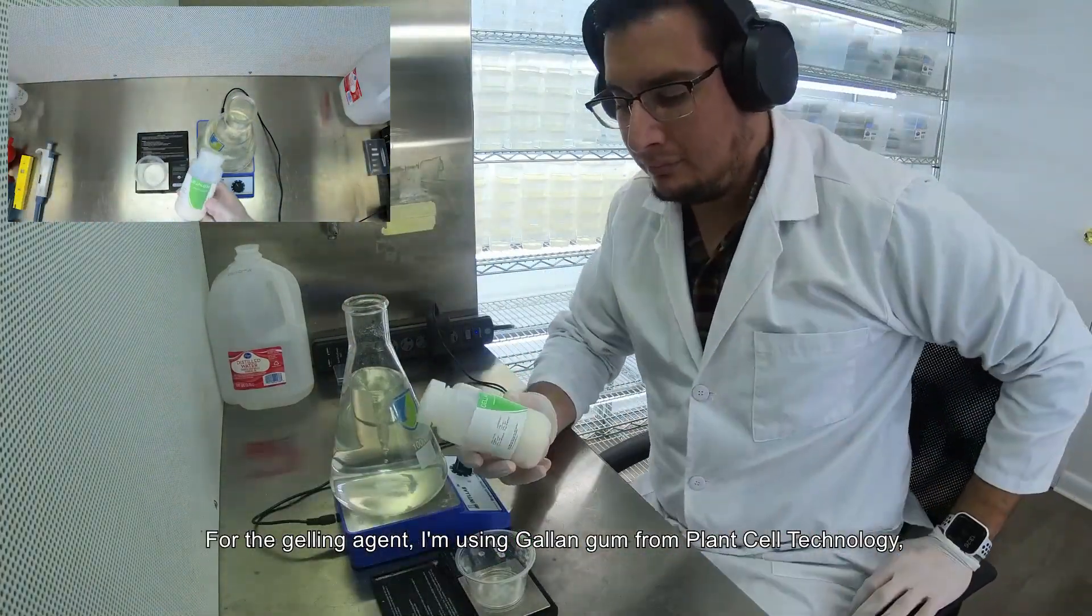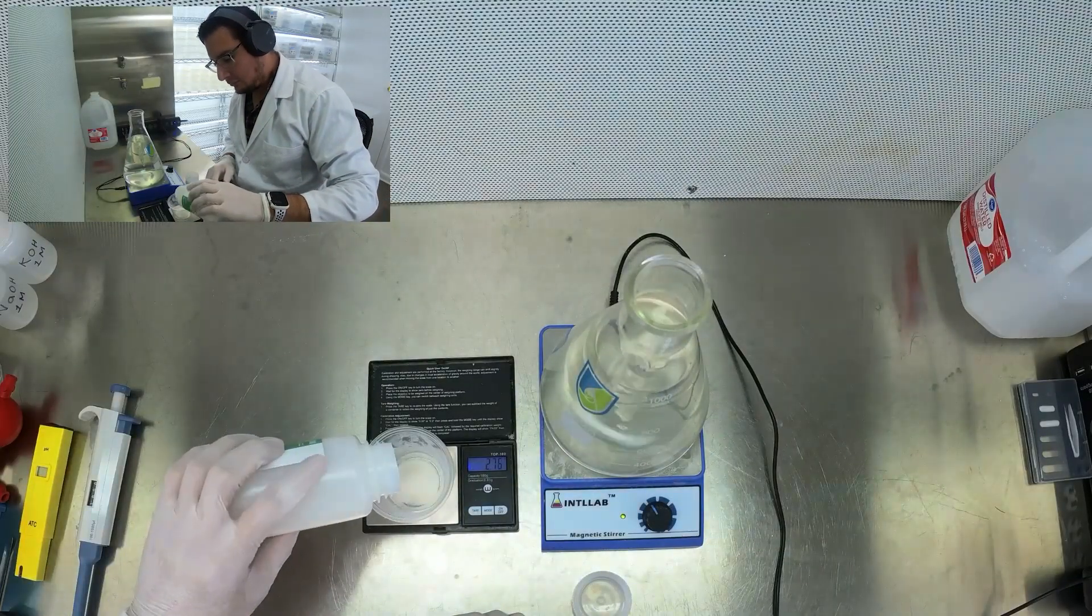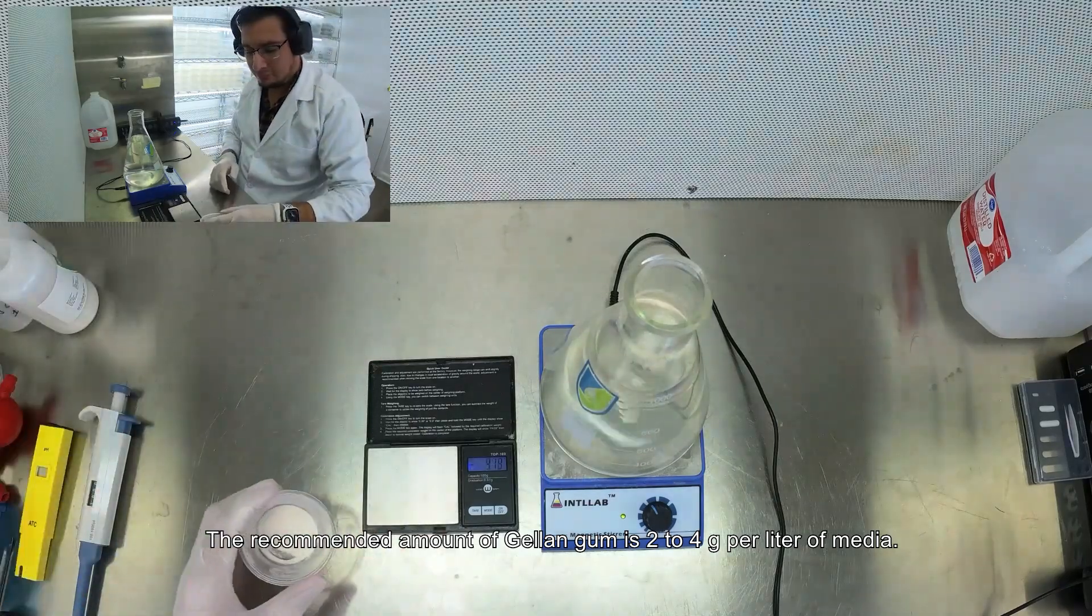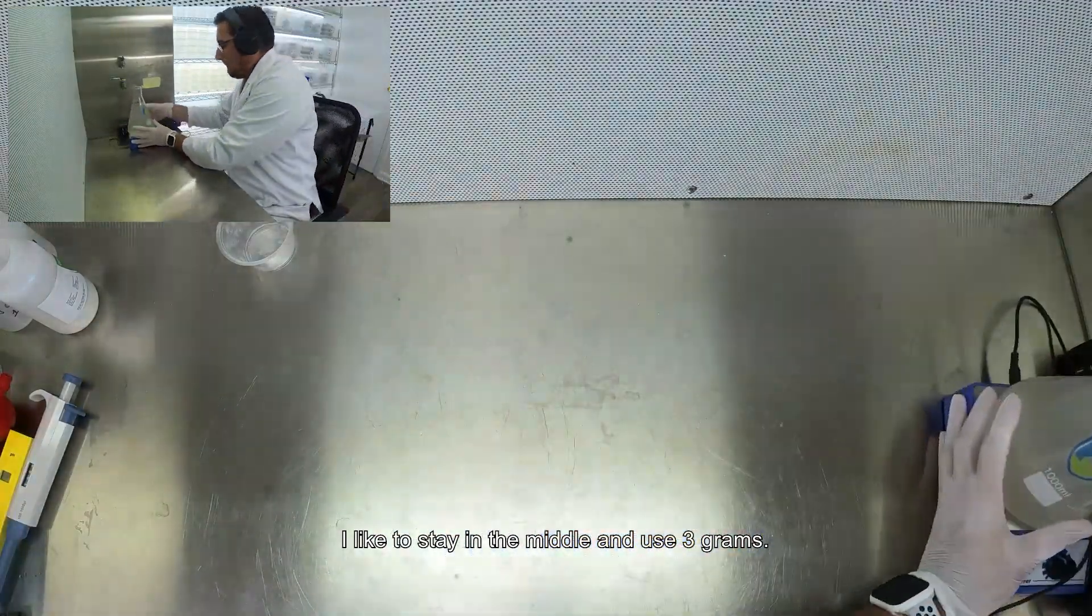For the gelling agent, I'm using gelangum from Prancell Technology, but this method also works for agar or gelsen. The recommended amount of gelangum is 2 to 4 grams per liter of media. I like to stay in the middle and use 3 grams.